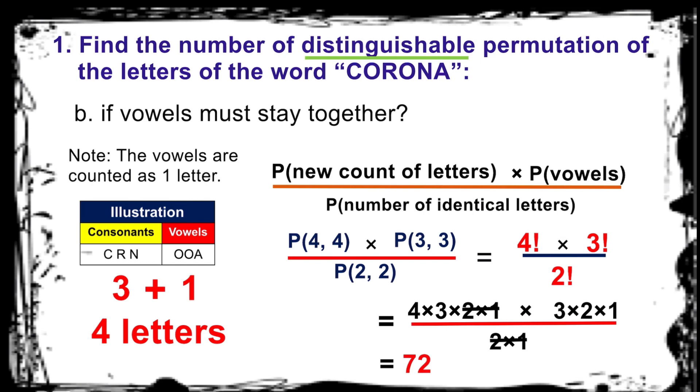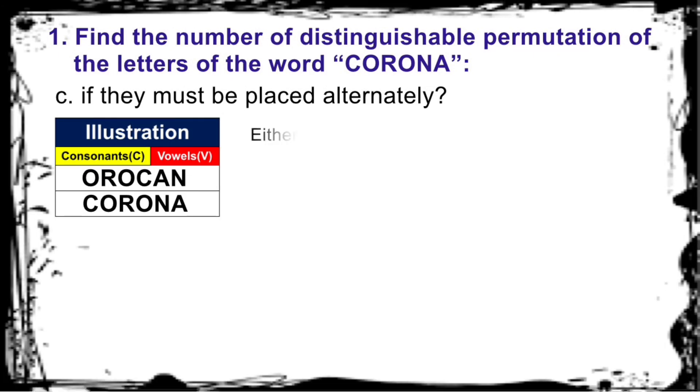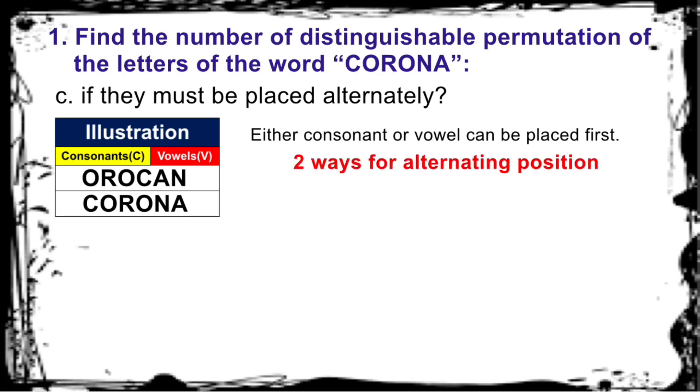Great! Now let's see if my solution to the third condition is the same with your solution. This is the illustration arranging them separately. Did you do the same illustration too? Well done! Either consonant or vowel can be placed first. How many ways did you get? You are correct! There are two ways for alternating position.